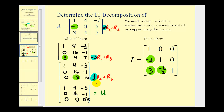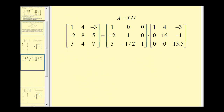We now have our LU decomposition. Here's matrix L and here's matrix U. To put the pieces together: A equals L times U, where A is the given matrix, L is the lower triangular matrix, and U is the upper triangular matrix.